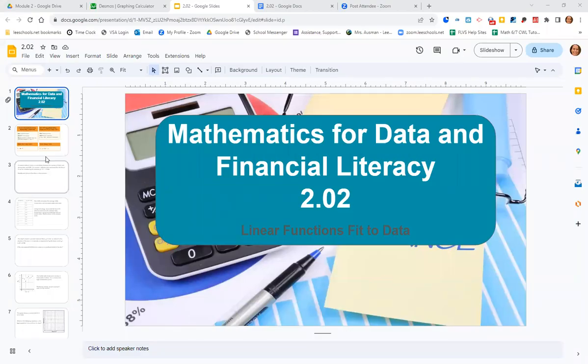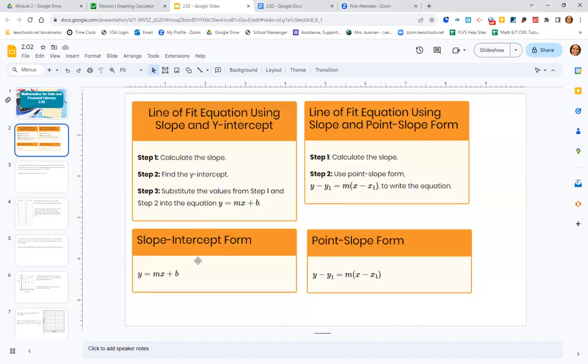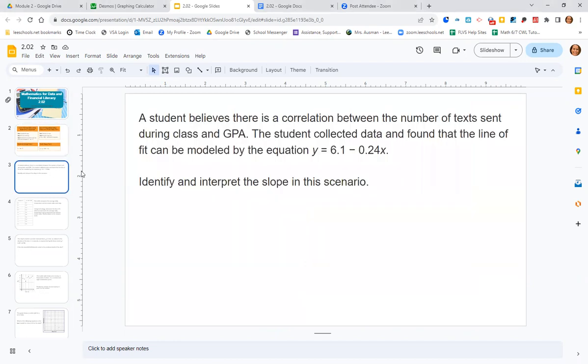Alright everybody, today we're going to go over 2.02 and the linear functions fit to data assignment. Before we do that, make sure you've got some great notes from this lesson, specifically the slope intercept form and how to find it and the point slope form and how to find it. This is in your lesson, but these are important so that you can solve the problems.